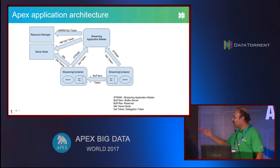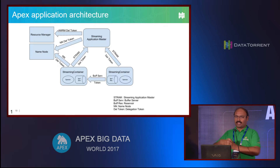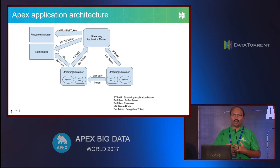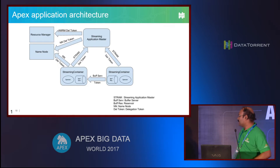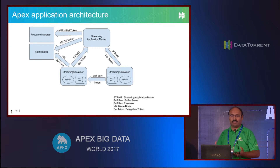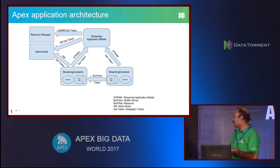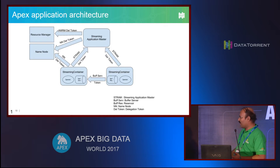This is how a running application looks. Every application has one application master - it's the first thing that starts. The CLI starts the application master, and then the application master looks at your application and figures out how many operators and how many containers, and then starts all those containers. Hadoop doesn't know Apex or how you built your application - it'll only start the application master, which we tell it to. So if you have three operators, by default we create three containers and put each operator in its own container.